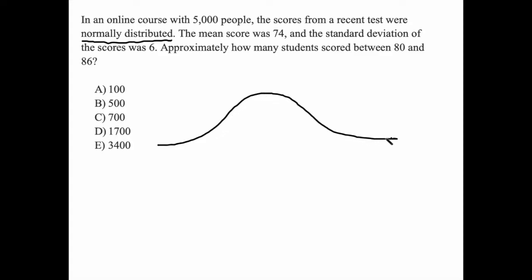And in a normal distribution, the middle value is also the most frequent one, is also the average. So when they say that the average score is 74, we know that that's right here.